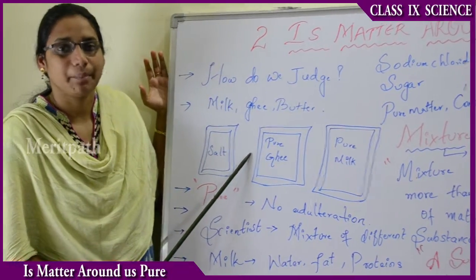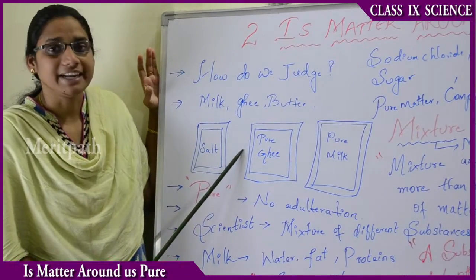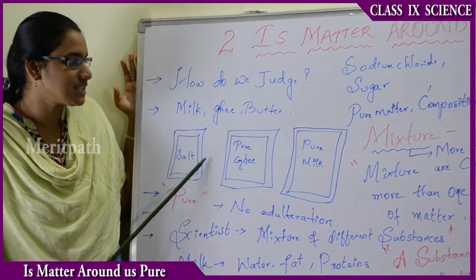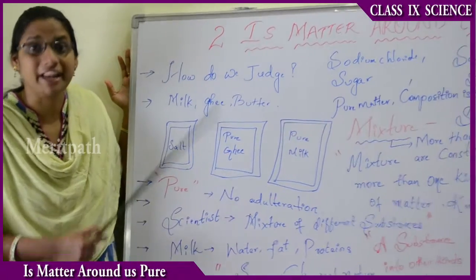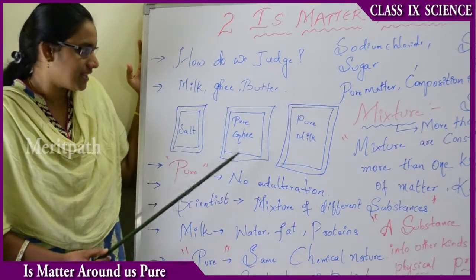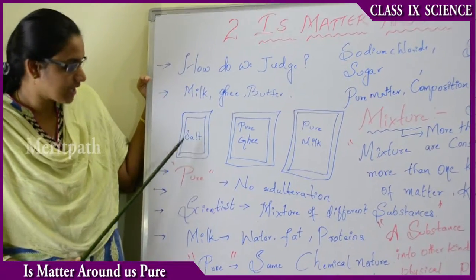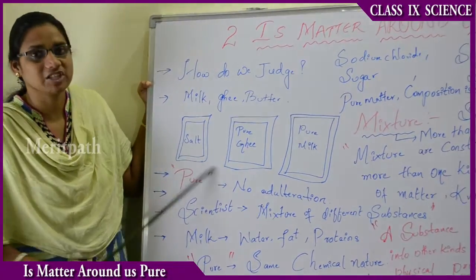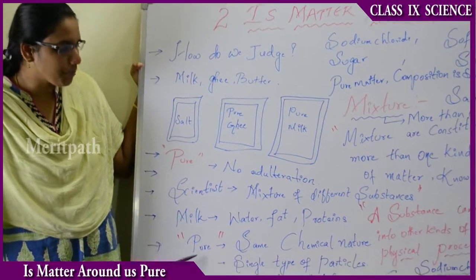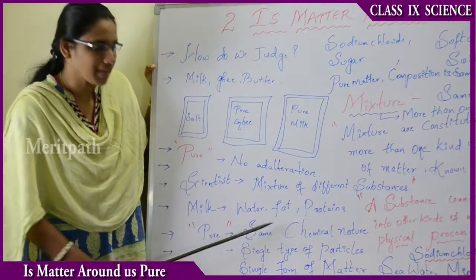Matter around us is mixed — it is a mixture of different types of substances with different chemical and physical properties. For example, ghee consists of many particles with different chemical and physical properties. Similarly, milk or salt are also mixtures of various substances and particles.